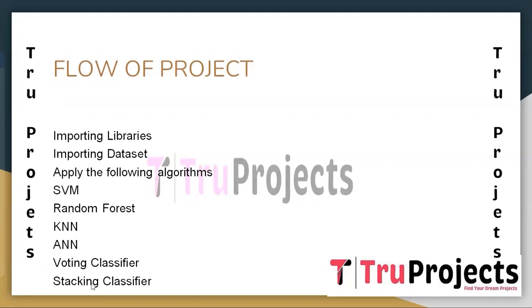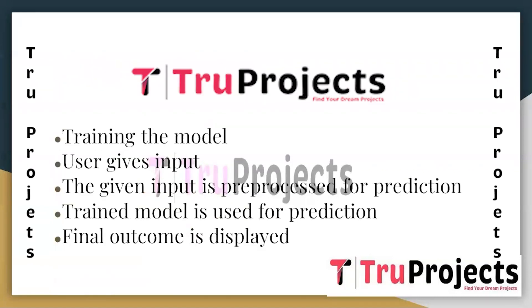The sixth algorithm is the Stacking Classifier, also an ensemble method that combines multiple models using a meta-model. Instead of simple voting, the meta-model learns from the predictions of the base models to make the final prediction. Stacking allows base models to specialize in different areas and leverages their collective strength, often yielding better results than any individual model alone. However, it requires careful selection of base and meta models to avoid overfitting.